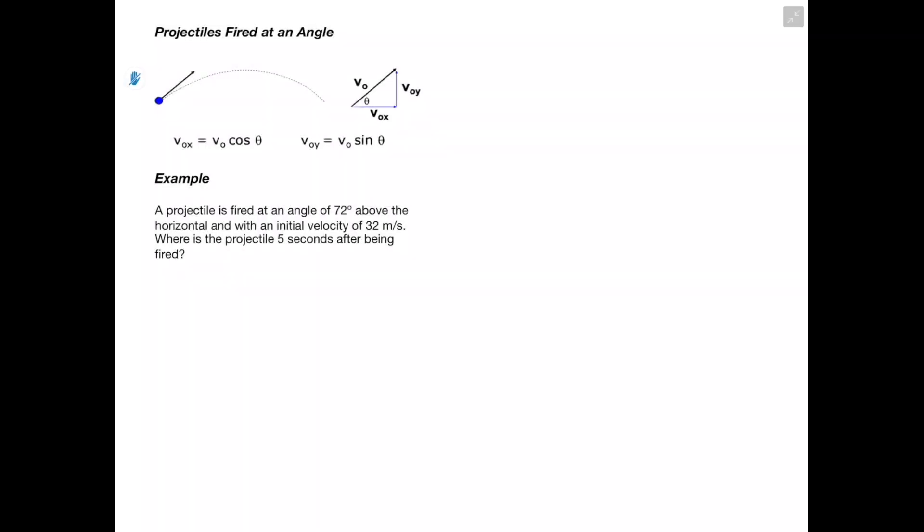Next we're going to learn what to do when we have projectiles fired at an angle. In the last example the projectile was thrown completely horizontally, so there was no initial vertical velocity. However, when a projectile is thrown at any angle other than the horizontal, there will be an initial vertical velocity. We'll need to solve for the initial vertical and horizontal velocities, which we'll learn in the example below.